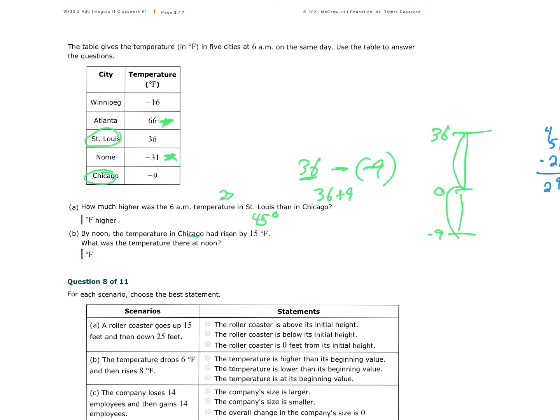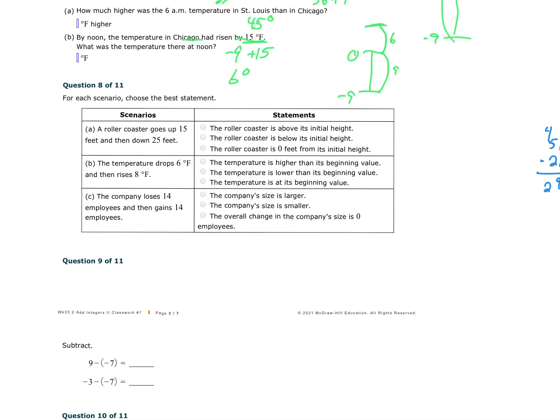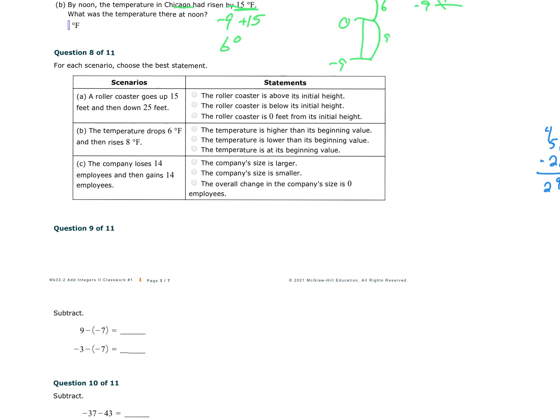By noon, the temperature in Chicago had risen 15 degrees. It's gone up 15. Chicago was at negative 9 and it's gone up 15. So it takes 9 to get up to 0 and then another 6 to get up to 15 total. So we're at negative 9 plus 15, which gives you 6 degrees. At noon, 6 degrees. Put on your t-shirts. Just kidding.